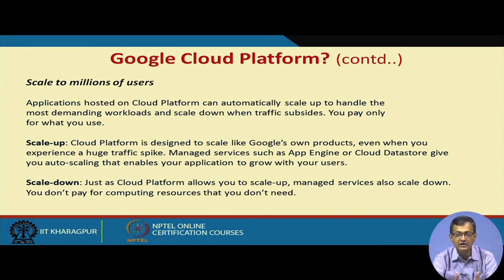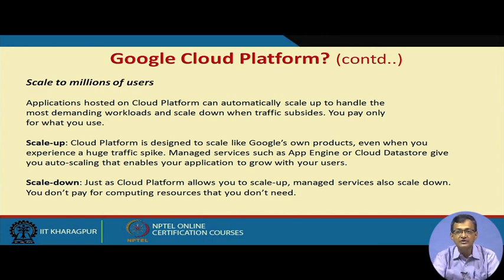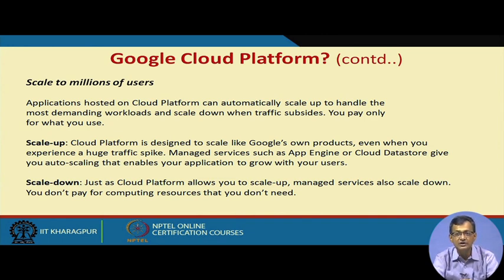Cloud Platform is designed to scale like Google's own products. Even when you experience a huge traffic spike, Google offers the same type of support and management they apply to their own products. Managed services such as Google App Engine and Cloud Datastore provide auto-scaling, enabling your application to grow with your users. You can also scale down — if you have lesser load, computing resources are released or deactivated accordingly.